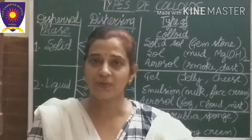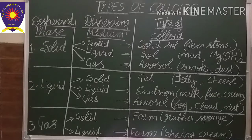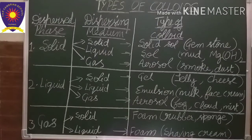Now let's study the types of colloids. I have written the columns as dispersed phase, dispersing medium, type of colloid, and examples. Firstly, when a solid is dispersed in a solid, that type of colloid is called a solid sol. Examples are gemstones and milky glass.